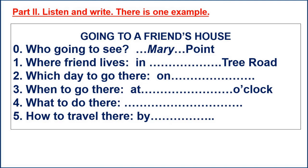One. Where does your friend live? She lives in Apple Tree Road. Did you say Apple Tree Road? Yes, dad — it's near the lake. It's nice there. Yes, I know. Two. Which day do you want to go there? She said come on Friday. Okay, well I think you can go on Friday. Thanks, dad.